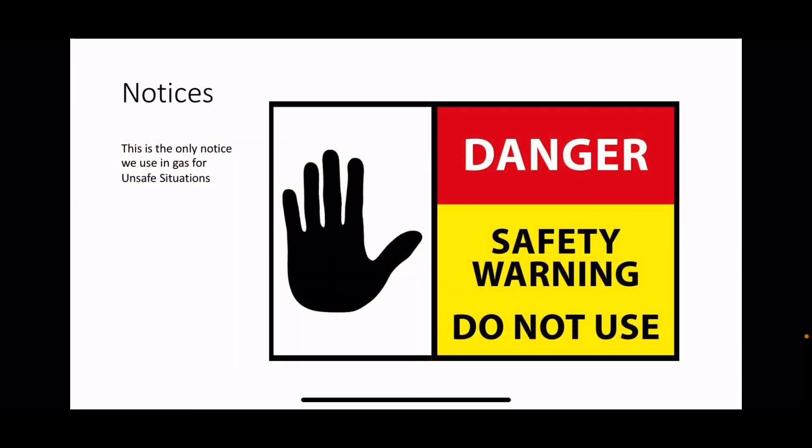We only use one notice for gas: when it's immediately dangerous and you've shut it off, you use the 'Danger - Safety Warning - Do Not Use' label. Straightforward - if you need to use it, that's the one.